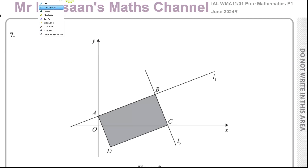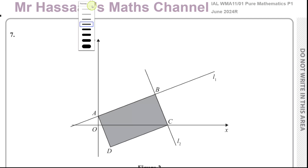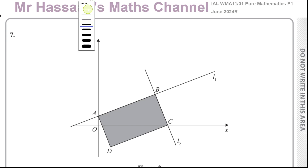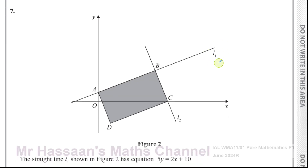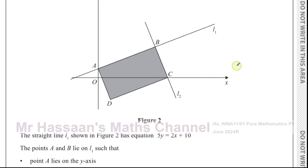Welcome back, this is Mr. Hassan's Maths Channel, and I'm now answering question number 7 from the June 2024 R replacement paper for the Pure Mathematics 1 P1 paper, International A-Level at Edexcel. This question is all about straight line graphs, and we're given this diagram.